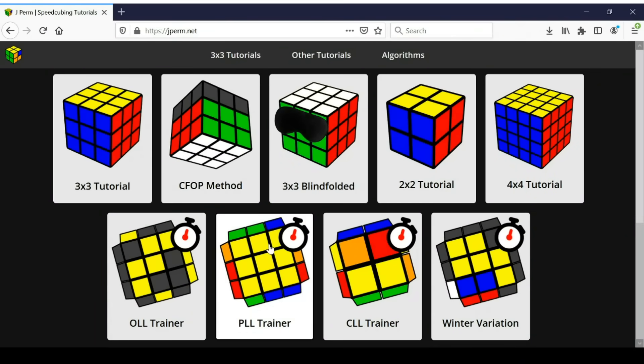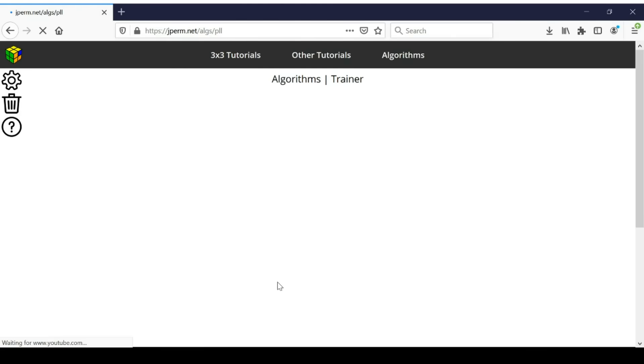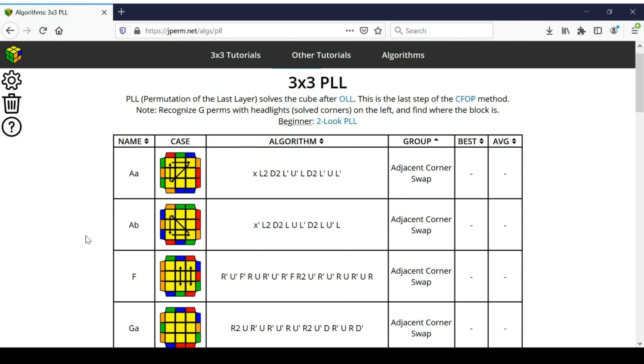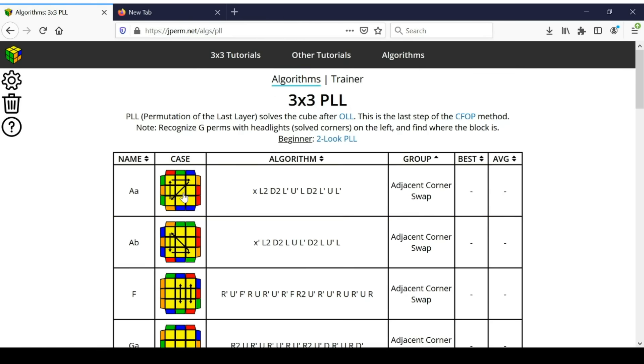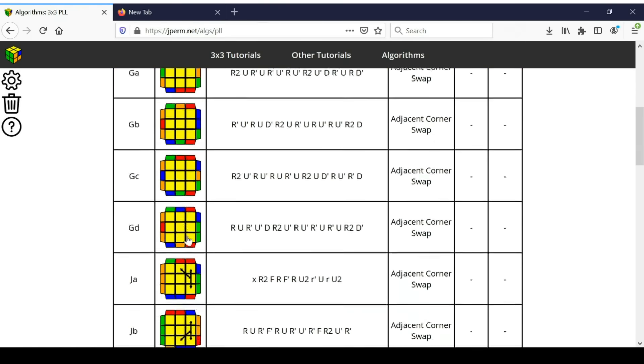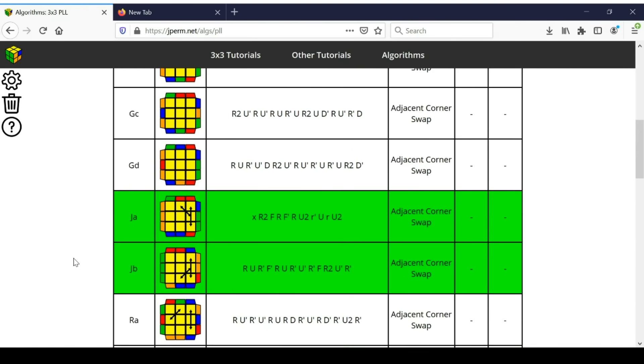And that's one of the main reasons why I made the jperm.net algorithm trainer. And you can trust that this is legitimate advice because I don't make money from this website. So briefly, how the website works is there are algorithms, and you don't have to like those ones. You can change them yourself. And then you can also click on the pictures to choose which ones are ones you're learning, and which ones you have finished learning.